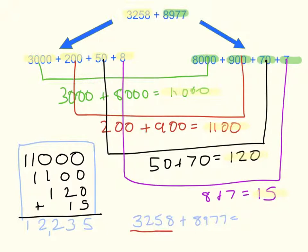So the answer to the question, 3,258 plus 8,977, equals 12,235.